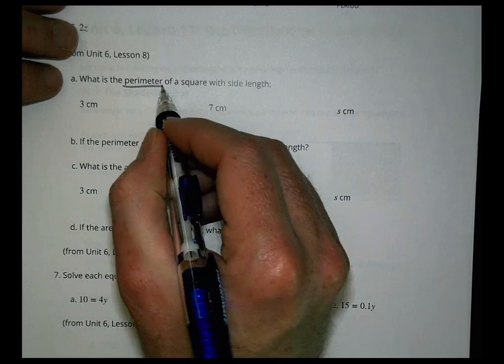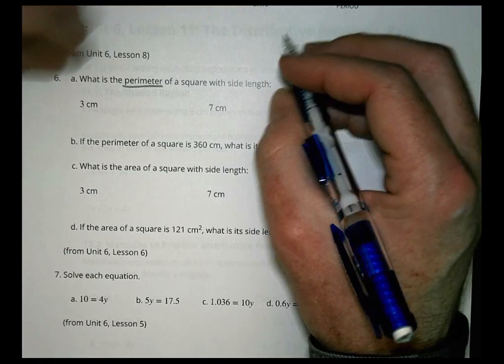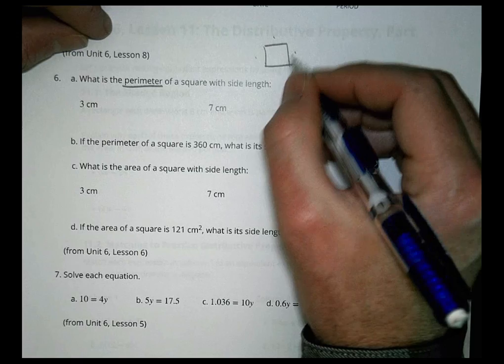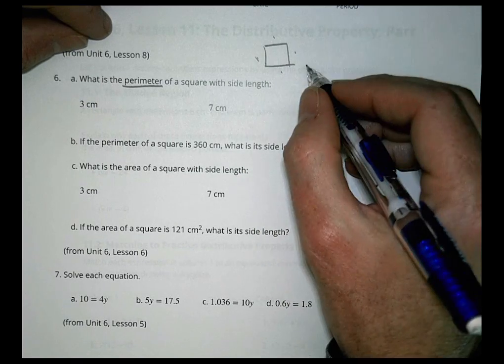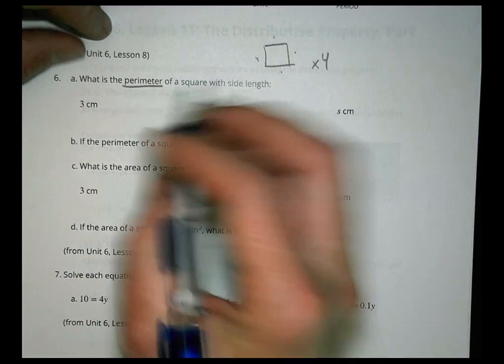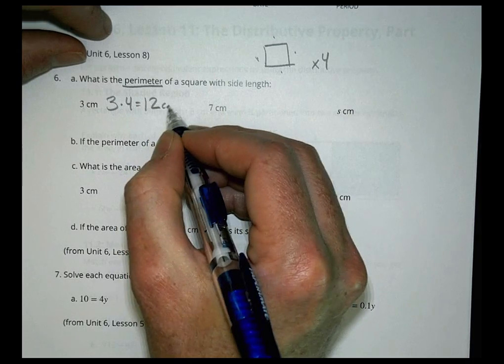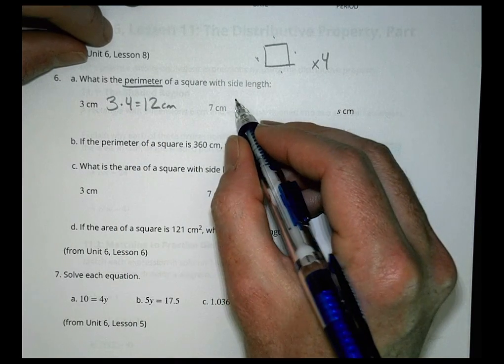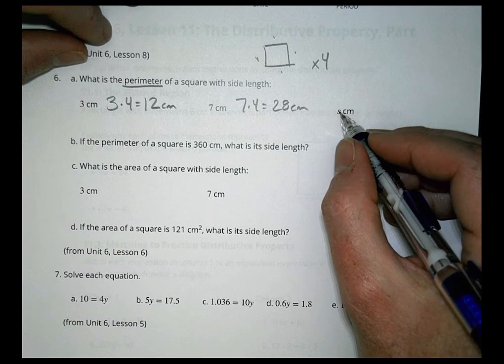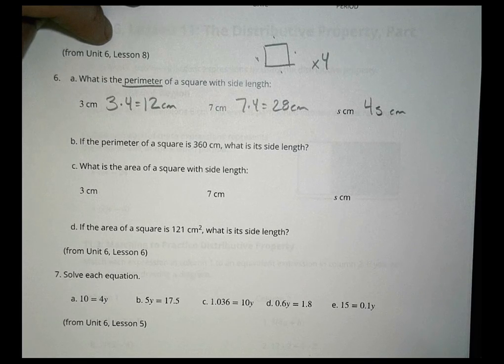Number 6. What is the perimeter of a square with side length 3, 7, and s? Perimeter is going to be found by taking a side length and multiplying it by 4. So for perimeter, we're going to do 3 times 4, which is 12 centimeters. For this one, 7 times 4, which is 28 centimeters. And for s, we would do 4s centimeters. We just multiply it by 4.